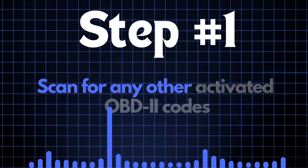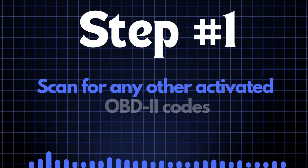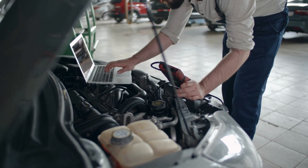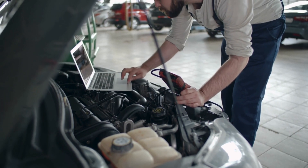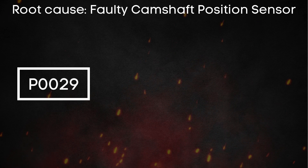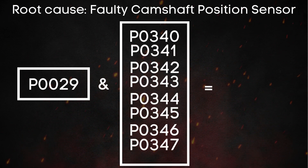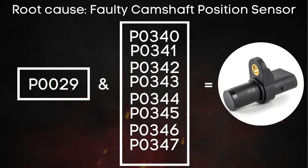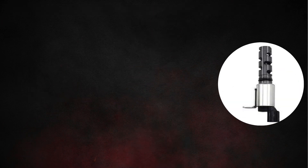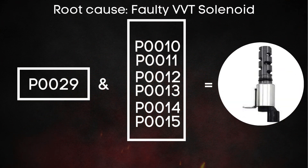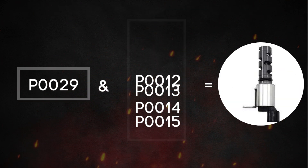The first step is to scan for any other activated OBD-II codes. This helps us pinpoint where we need to focus. If there are other codes related to a faulty camshaft sensor, we should focus on the camshaft sensor. Similarly, if there are codes related to the VVT solenoid, that's where our attention should go.